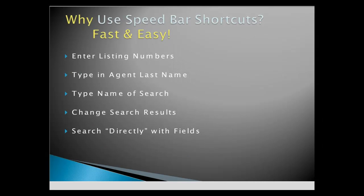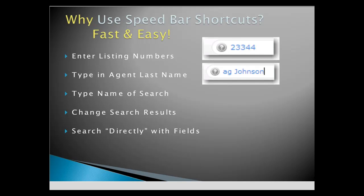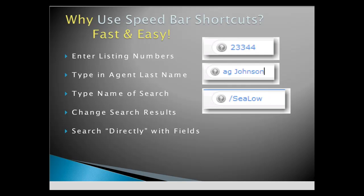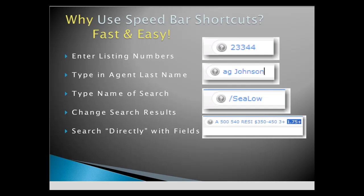In conclusion, we can enter a variety of criteria directly into the Speed Bar as a shortcut. Enter a listing number for lightning-fast results. Search for agents with their first and last name. Pull up saved shortcuts with a forward slash and a few characters. From the Search Results screen, change your criteria with a few keystrokes.